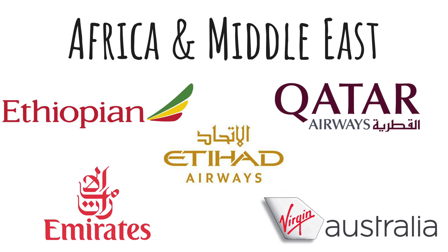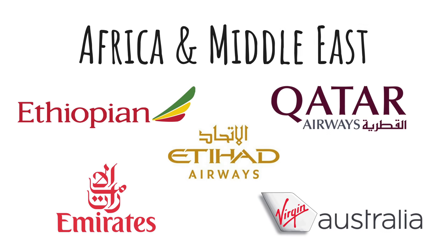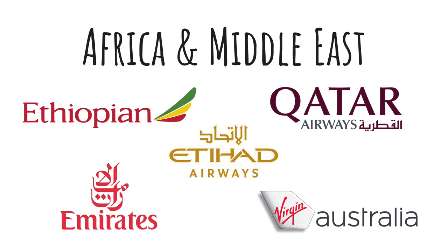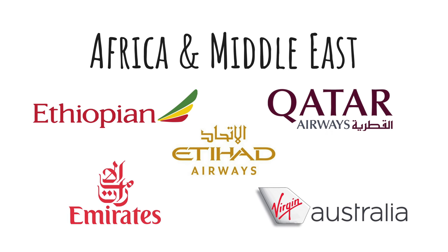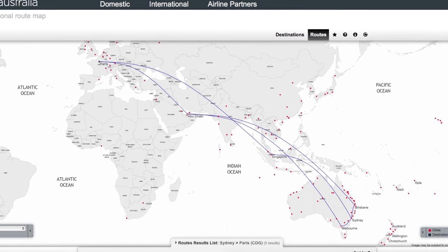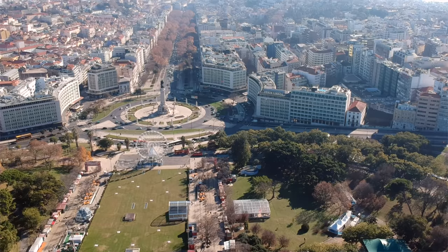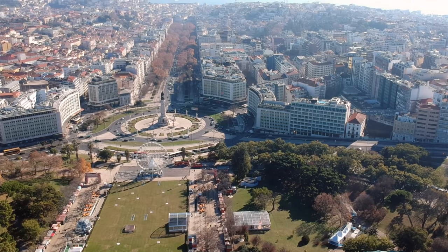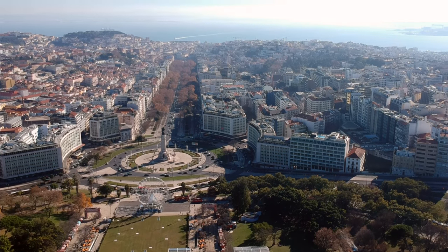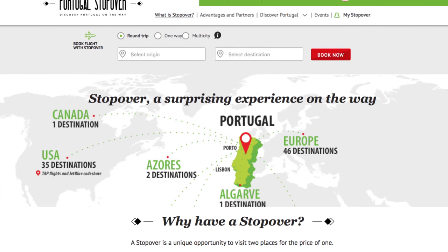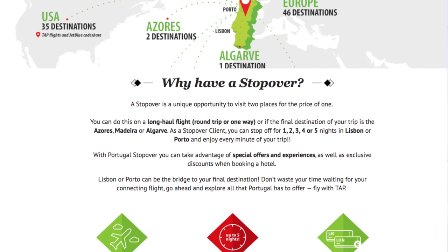For Africa and the Middle East, check out Ethiopian Airlines, Emirates, Etihad, Qatar Airways, and Virgin Australia — I put Virgin Australia in this group since a lot of their flights stop in the Middle East. We traveled to Lisbon during the winter holiday and if we had more time, we would have loved to take advantage of TAP Portugal's overnight layover policy and offer. It would have been a great way to see other cities in Portugal like Porto.